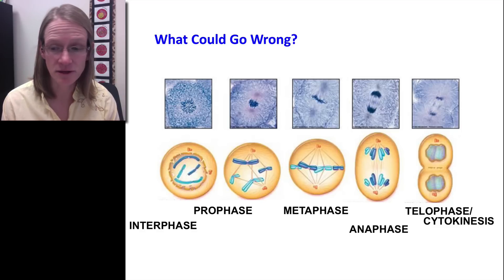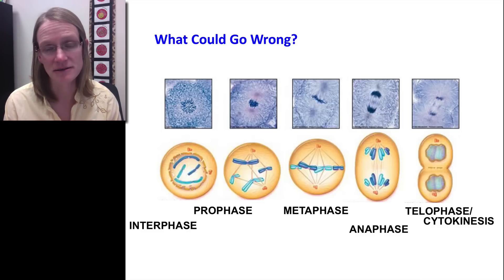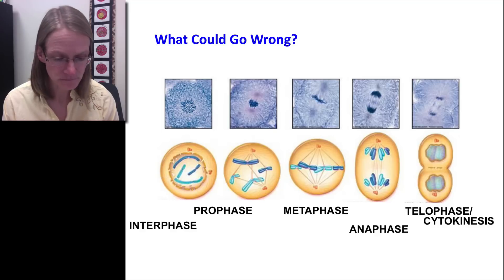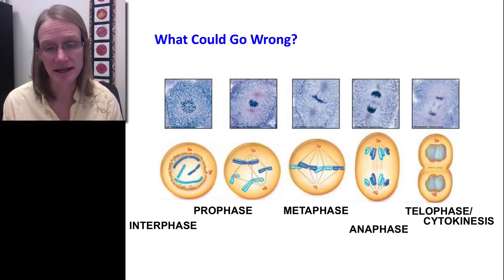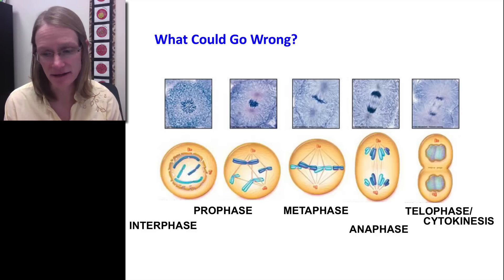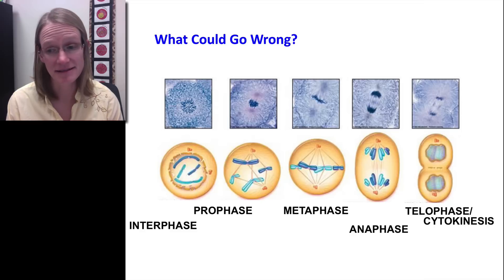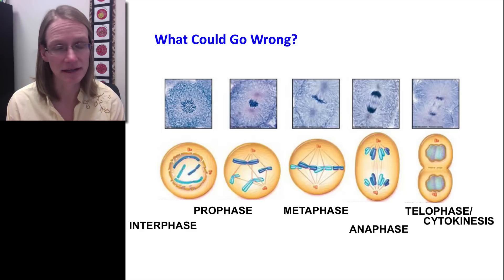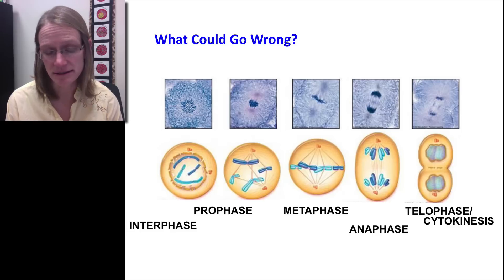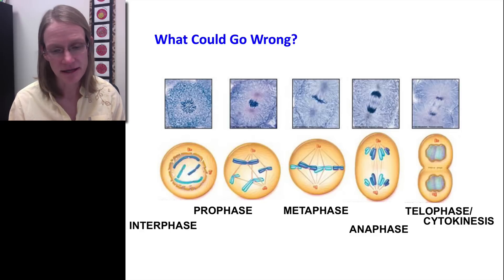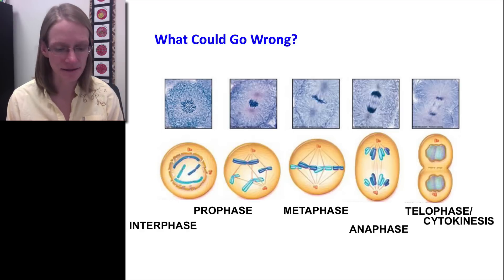In telophase, the nuclear membrane needs to reform after chromosomes reach the correct position — that could fail. The chromosomes might remain coiled rather than uncoiling, or the spindle could remain intact. In cytokinesis, the cytoplasm might fail to split, leaving two nuclei in one cell. There are many things that can go wrong, so normal cells need checks and balances to avoid these potentially dire outcomes.